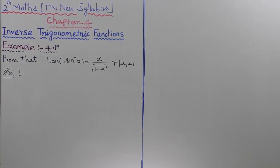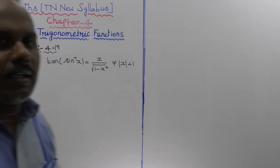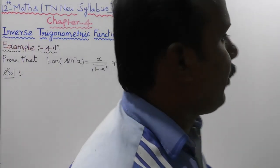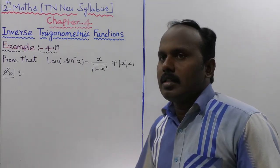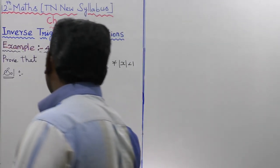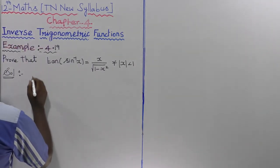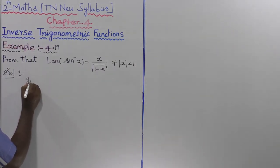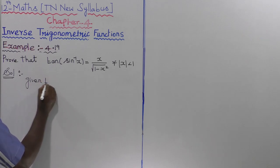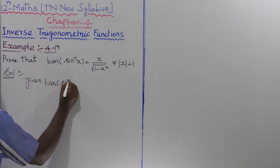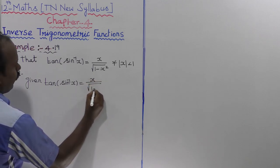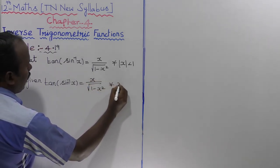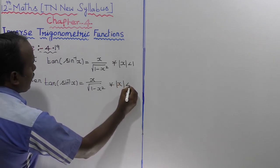Example 4.19: Prove that tan of sin inverse of x is equal to x divided by root of 1 minus x squared, for all x with modulus of x less than 1.